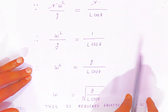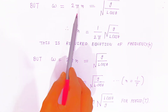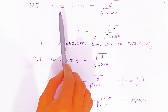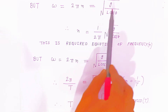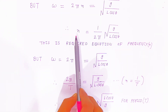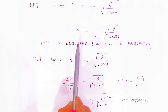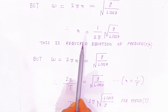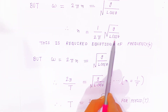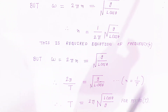With this expression we can also calculate the frequency. Since ω = 2πn, comparing with √(g / L cosθ), we get 2πn = √(g / L cosθ), so the frequency is n = (1/2π) √(g / L cosθ). This is the required expression for the frequency of the conical pendulum.